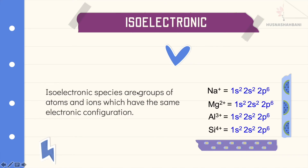Isoelectronic species are groups of atoms and ions which have the same electronic configuration. For example: Na⁺ is formed when a Na atom loses one electron; Mg²⁺ forms when Mg loses two electrons; Al³⁺ forms when Al loses three electrons; Si⁴⁺ forms when Si loses four electrons. They all have the same electronic configuration, so we call them isoelectronic species.